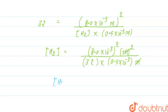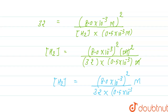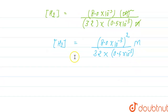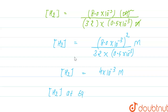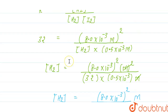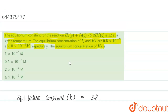Simplifying this term, the concentration of H2 equals (8.0×10⁻³)² divided by 32 times 0.5×10⁻³. Calculating from this, the concentration of H2 equals 4×10⁻³ molarity. This is our equilibrium concentration of H2, so the correct option is option number 4: 4×10⁻³ molarity.